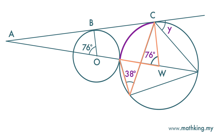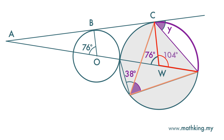Next, we want to find Y. To find angle Y, first we identify the chord and then the alternate segment. This angle in the alternate segment equals Y. This angle at circumference is subtended by this arc, and the same arc also subtends an angle at the center here. We can find the value of this angle: it is 180 minus 76, which is 104 degrees. Since the angle at center is 2 times the angle at circumference, the angle at circumference here is 52 degrees.